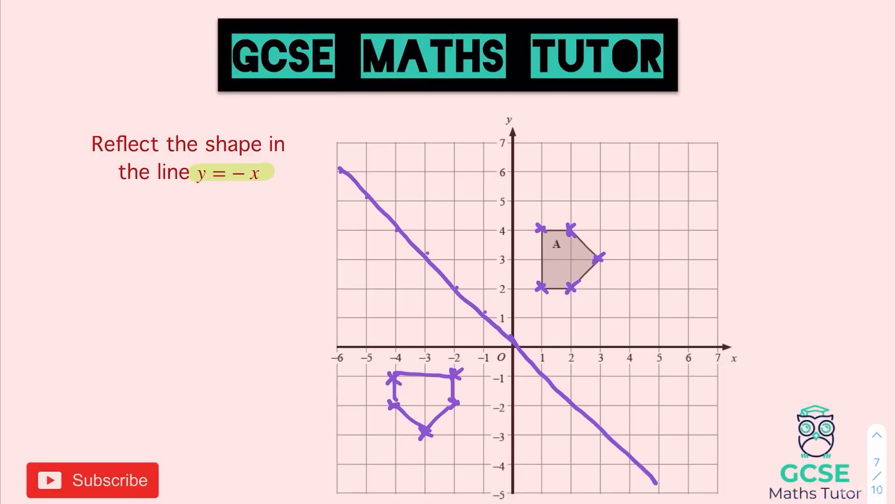That is what your shape should look like. You can rotate it so that the line is pointing upwards, and that makes it a lot easier to see the reflection.